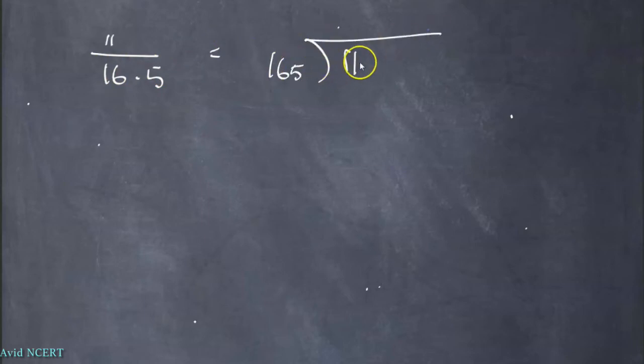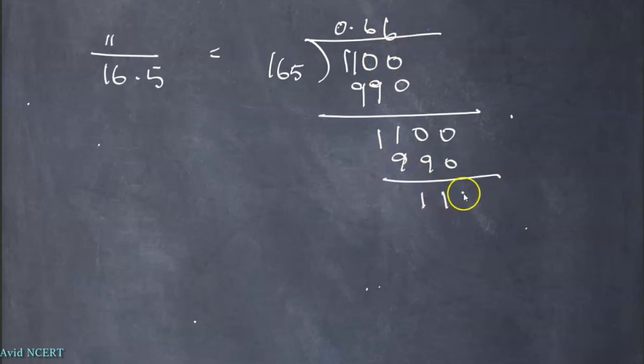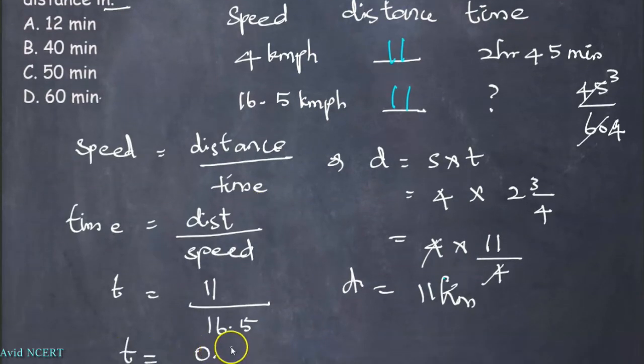I just wanted to show how to divide this. 11 divided by 16.5, so this can be done as 165 and 1100. Since this is less than this, we add a decimal point. Still this is less than the divisor, so one more zero is added, and this is 6 times. 6 times 5 is 30, 6 times 6 is 36. When you subtract this, you get 11, and since this is less than this, again we have to add 0 and this keeps on repeating, which is 0.6667. So this can be changed to 0.67.